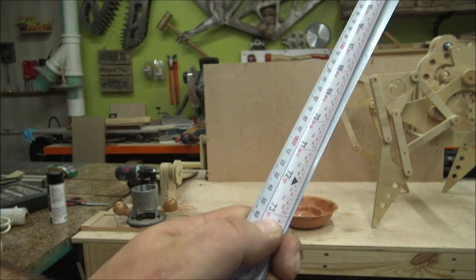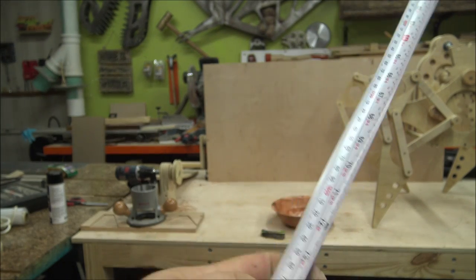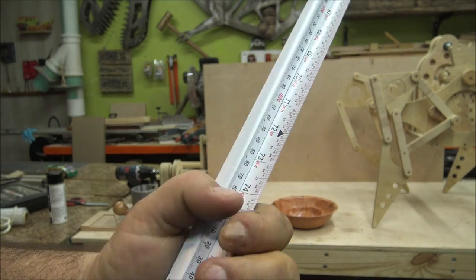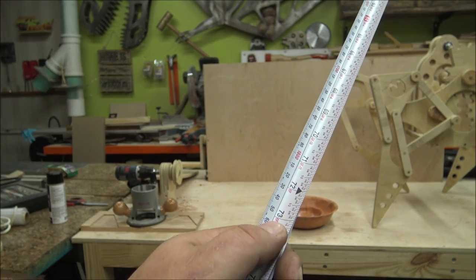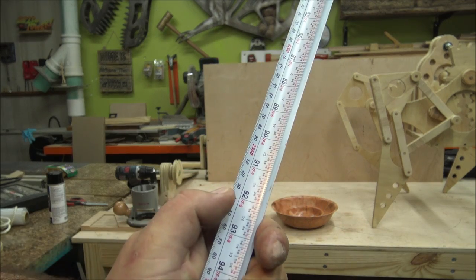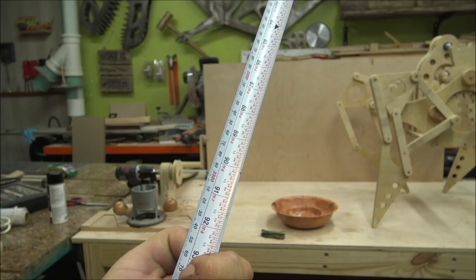For instance, I was born in 1973. If you flip it over, it says 42. That's how old I am and it works all the way up and down the tape. So if somebody was born in say 1992, flip it over, it'll tell you they're 23 years old.